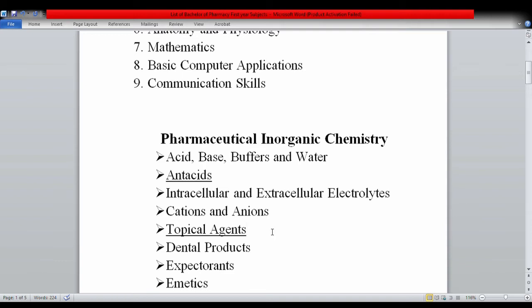Dental products are covered. Expectorants are for cough. In pharmacology, you'll learn the classification. Examples include bromhexine and carbocysteine.